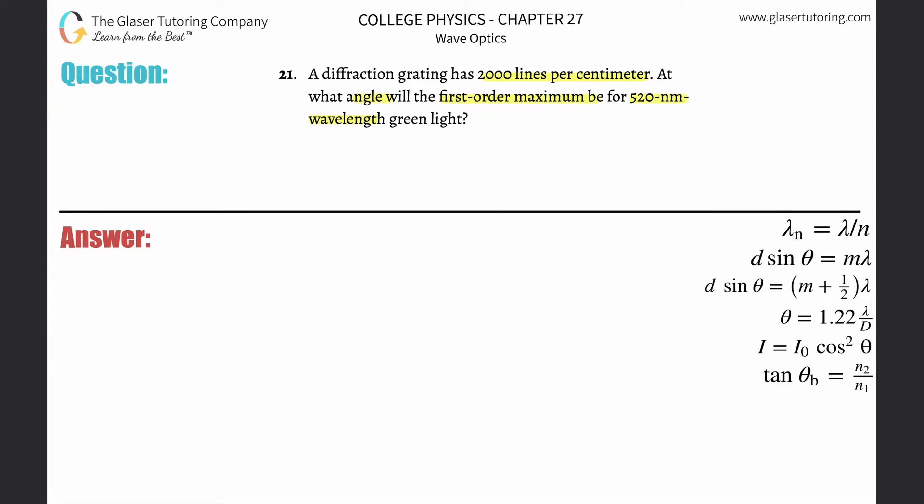The first thing, anytime they give you the number of lines per distance or per unit length, we can find the distance between the slits, aka the lines. We simply do that by inverting 2000 lines per centimeter. We can say the centimeters per line will give me the distance between those lines.